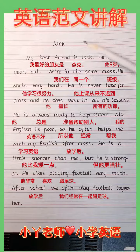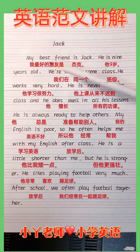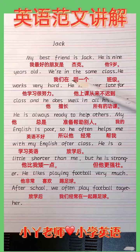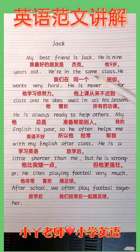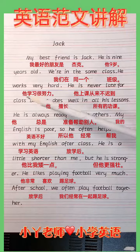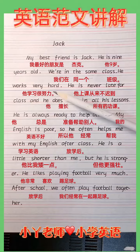学习一篇介绍人物的作文。Jack: My best friend is Jack. He's nine years old. We are in the same class. 'Same' 意思是相同的，前面必须与定冠词 'the' 联用。He works very hard.